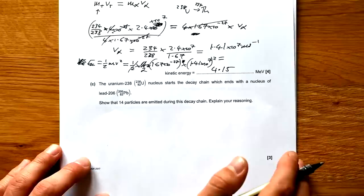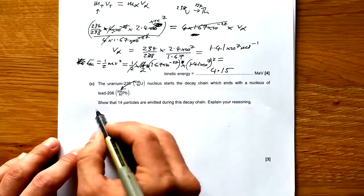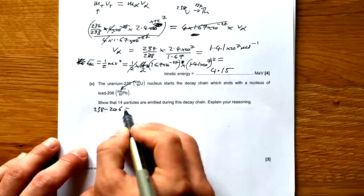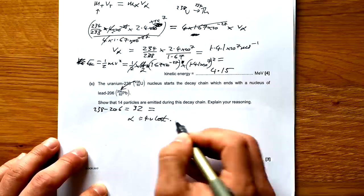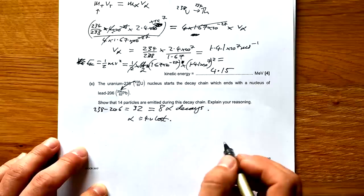Uranium nucleus starts the decay chain which ends with a nucleus of lead 206. Show that 14 particles are emitted during this decay chain. Explain your reasoning. So first of all, we need to get from 238 down to 206. So 238 minus 206 equals 32. And that is equal to how many alpha decays? Well, each alpha decay is 4u lost, as it were, 4 relative atomic mass units lost. So this is going to be 8 alpha decays.